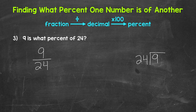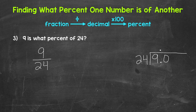9 divided by 24 — how many whole groups of 24 in 9? We can't do that, so we need a decimal and a zero. Extend the division bar and bring the decimal straight up. Now we can think of this as 90 divided by 24. How many groups of 24 in 90? That's 3, which gets us to 72. Put the 3 right above the zero. Multiply: 3 times 24 is 72. Subtract: 90 minus 72 is 18.